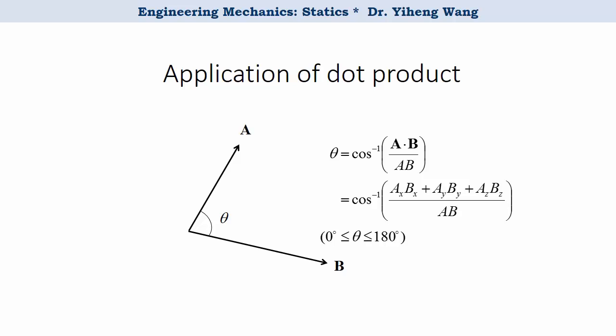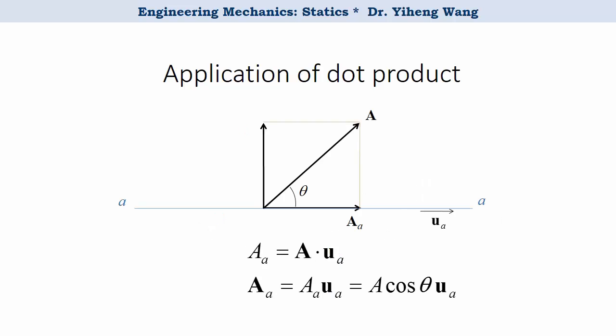Because of the algebraic and geometric definitions of dot product, it can now be used to find the angle theta between two vectors A and B following this formula, or to find the projection vector of any vector along a specified axis. Note, uA is the unit vector along the A axis.